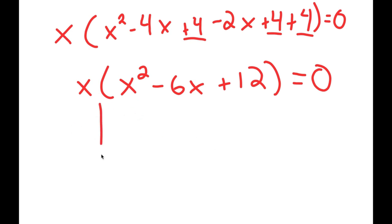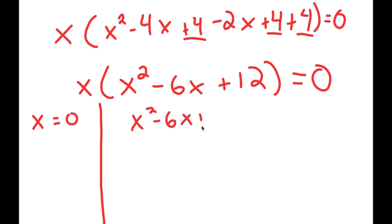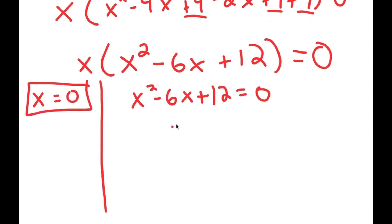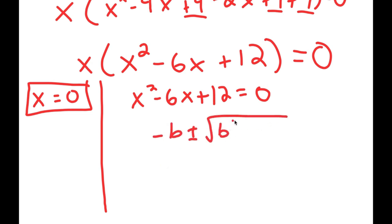From here, this gives me two equations. I get x is equal to 0, and I get x squared minus 6x plus 12 is equal to 0. So x equals 0 is already a solution. For x squared minus 6x plus 12 equals 0, we're going to have to use the quadratic formula, which is negative b plus or minus the square root of b squared minus 4ac all over 2a.